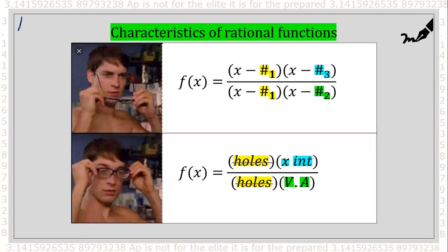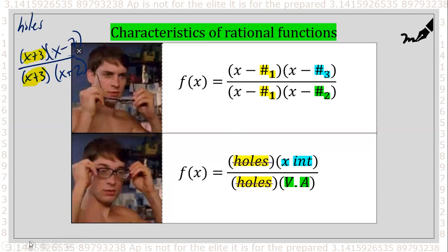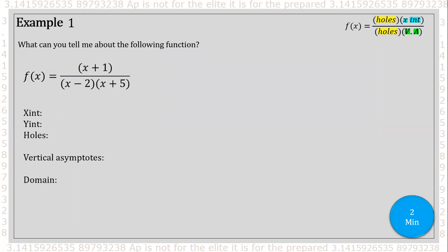For example, if you have x plus three on top and x plus three on the bottom, that gives you a hole. Setting x plus three equals zero gives x equals negative three — hole at x equals negative three. A factor of x minus seven in the numerator gives x equals seven as an x-intercept. And an x plus two only in the denominator gives x equals negative two as a vertical asymptote. Now go ahead and pause and try to find the x-intercept, y-intercept, hole, and vertical asymptote for this problem.